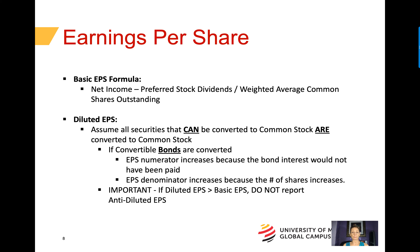Next, diluted earnings per share. Assume all securities that can be converted to common stock are common stock to compute diluted earnings per share. If convertible bonds are converted, the earnings per share numerator increases because the bond interest expense that would have been paid to the bondholders would not have been paid, and therefore net income would increase. Net income is the numerator of earnings per share. If diluted earnings per share is greater than basic earnings per share, then do not display the anti-diluted earnings per share. I will provide a video demonstrating the process of computing basic and diluted earnings per share — please look for that on my YouTube channel.